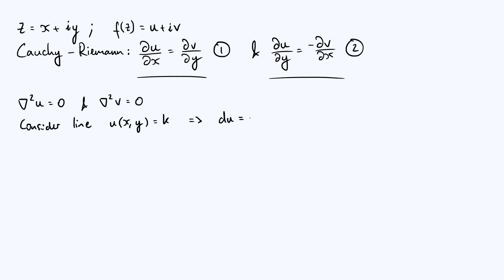In other words, any small change in u is zero as you move along the line, because by definition, u is constant along that line. So what we can do is expand out that du, the little change in u in terms of changes in x and y, dx and dy, using partial derivatives. So du is going to be the partial derivative of u with respect to x times a small change in x, plus the partial derivative of u with respect to y times any small change in y, and that is supposed to be zero.